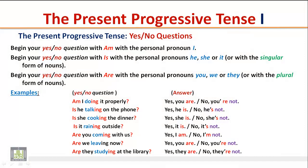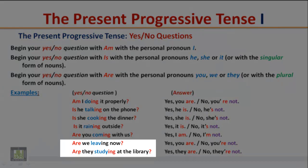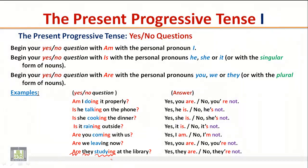Pay attention to the word order in yes/no questions: begin your question with the verb 'be,' followed by the subject, followed by the main verb.